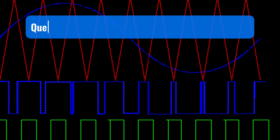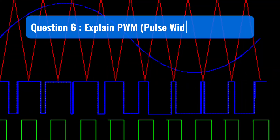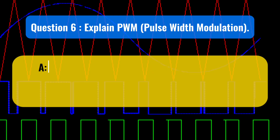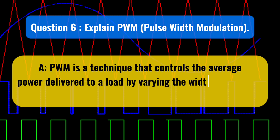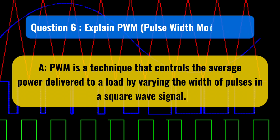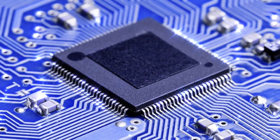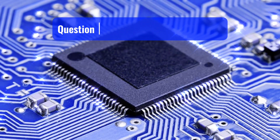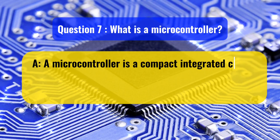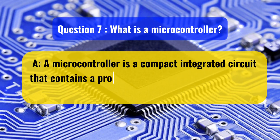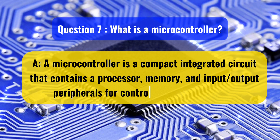Question 6: Explain PWM, pulse width modulation. PWM is a technique that controls the average power delivered to a load by varying the width of pulses in a square wave signal. Question 7: What is a microcontroller? A microcontroller is a compact integrated circuit that contains a processor, memory, and input-output peripherals for controlling digital systems.